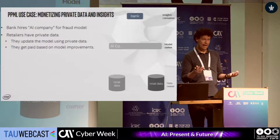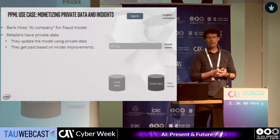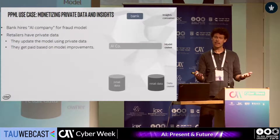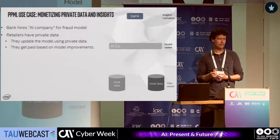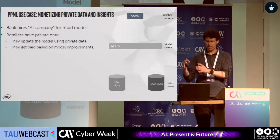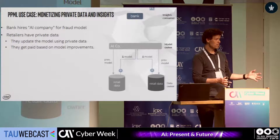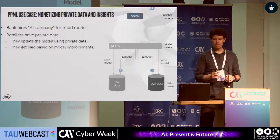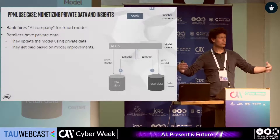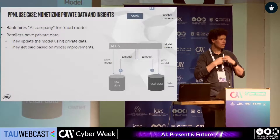Consider a bank that needs a fraud detection model. They go to an AI company that needs data but doesn't have it. Retailers each have relevant data pools. Using federated learning, an initial model is sent to all federation members, who use their private data to improve it and send improvements back. The AI company aggregates these improvements and sends out a new version, repeating the process — all without any party explicitly seeing the others' data.